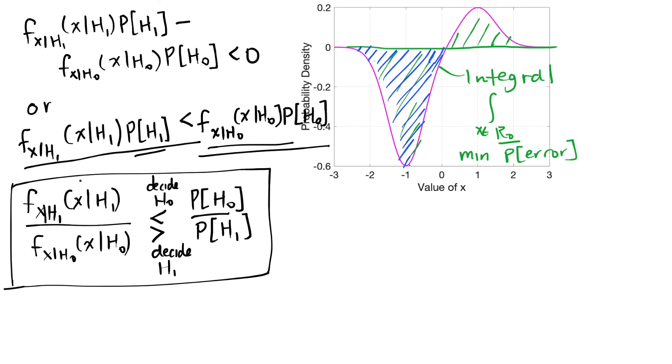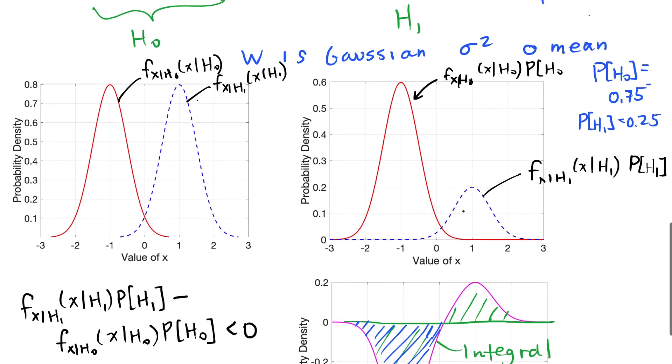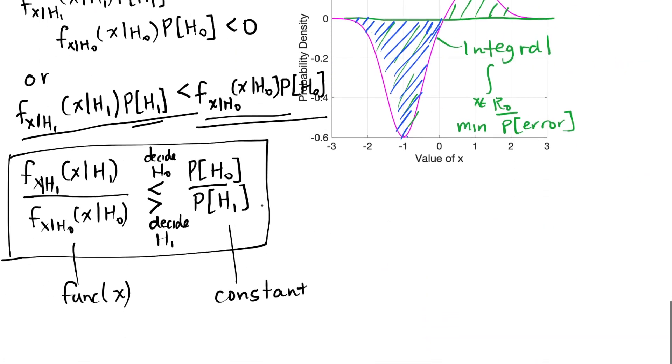We get a function of X on this side. And we get a constant on the other side that is dependent on what we know ahead of time about the probability of sending 0 and the probability of sending 1. And that's the way that we minimize this probability of error. So that is the way that a Bayesian, a Bayesian is somebody who believes that we know ahead of time the probability of our two hypotheses. That's the way our Bayesian decides whether H0 was sent or H1 was sent.